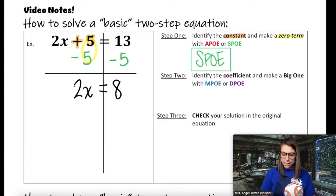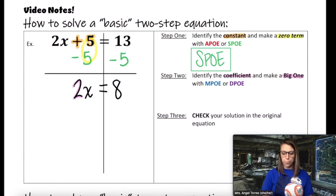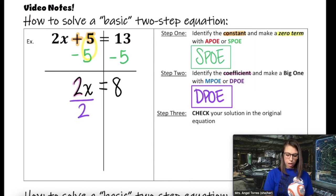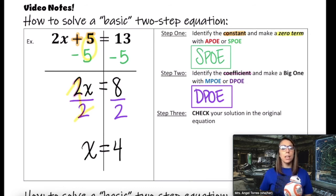Step two is to identify the coefficient — the number attached to the variable, which in this case is 2 — and make a big one using MPO or DPO. If I'm already multiplying by 2, I wouldn't want to multiply again, so I'm going to use DPO to create a big one. I divide by 2 on both sides. That creates a big 1 because 2 divided by 2 is 1, and 1x is simply x. 8 divided by 2 is 4. Through the process of using two properties of equality, I have x by itself — and I think that might be the solution.